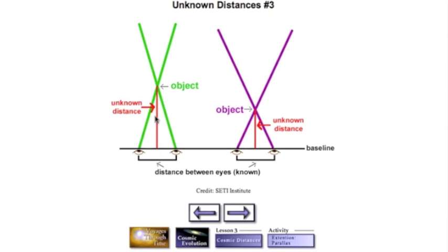In order to find the unknown distance to this object, we must measure two other things of this right triangle. The baseline, which is the distance between the eyes, and the parallax angle. The angle we find at the top of this right triangle.